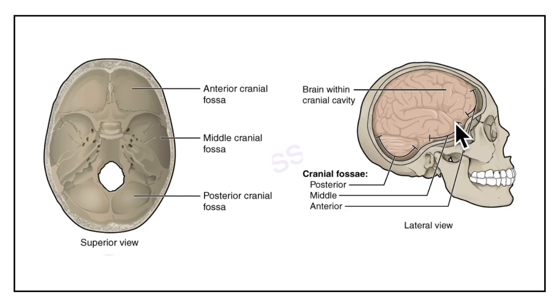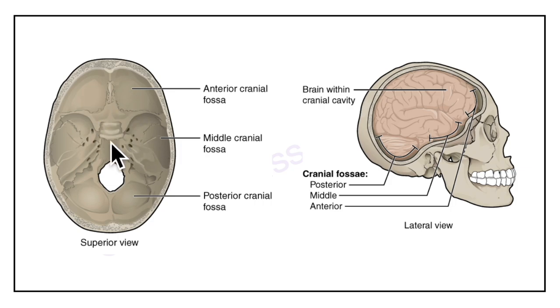Hello friends and welcome to my channel. In this video we will be learning about the anatomy of the cerebrum. To begin with, the cerebrum is the largest part of the human brain. It occupies the anterior cranial fossa, the middle cranial fossa and the supratentorial part of the posterior cranial fossa.